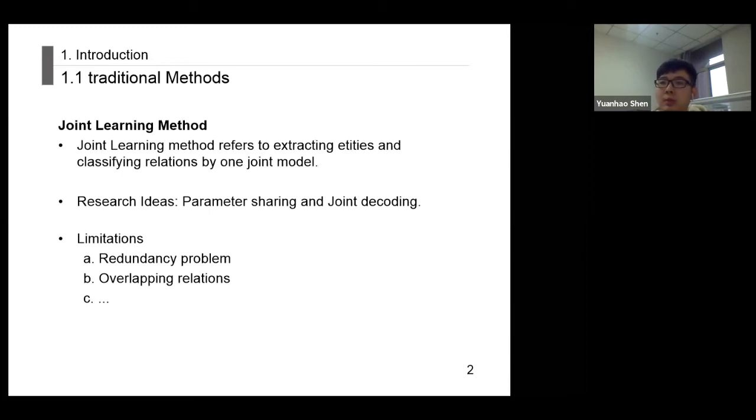To tackle these problems, researchers have conducted a lot of research on joint learning and achieved better results. Joint learning refers to extracting entities and classifying relations by one joint model. The joint model usually adopts two ideas: parameter sharing and joint decoding. Although these joint methods take advantage of the relevance of sub-tasks to mitigate error propagation, there are still overlapping relations and a serious redundancy problem.